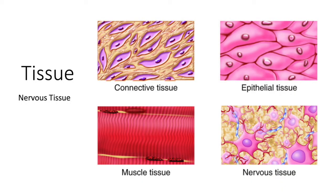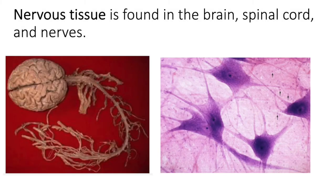The final tissue type that we will discuss is nervous tissue. Nervous tissue is found in the brain, spinal cord, and nerves. Don't let the simplicity of this information fool you, because when we get to the nervous system we will explore this type of tissue in more detail.